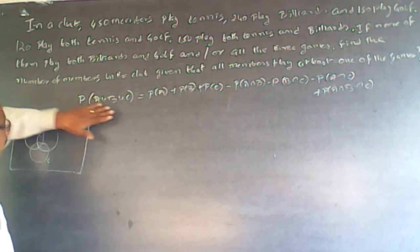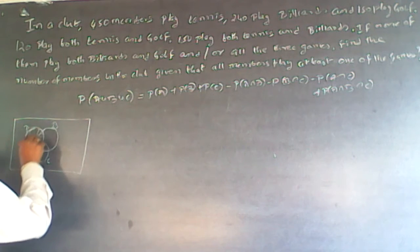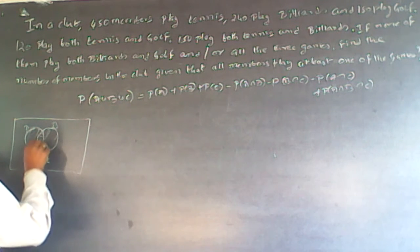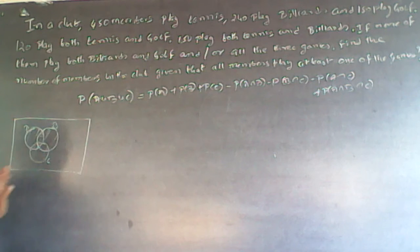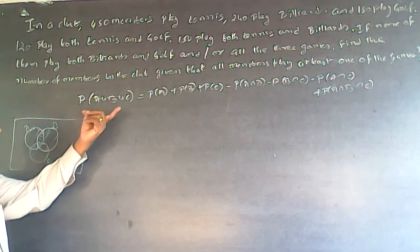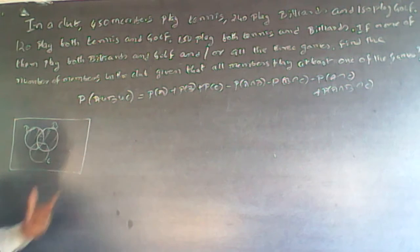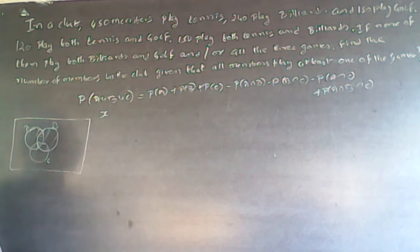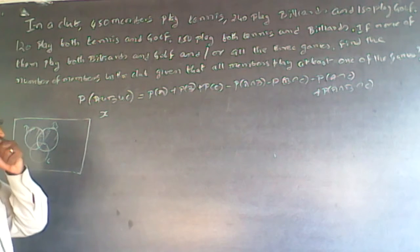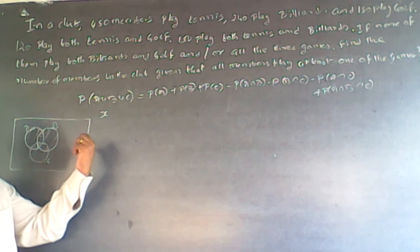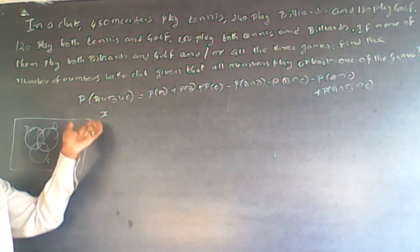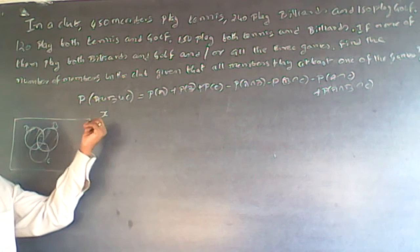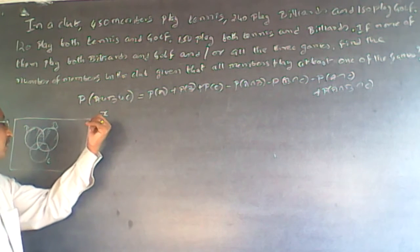A union B union C means all those coming here. Which number you don't know? So the algebraic was x, you have to find out. This number you don't know, you have to find out. So this is x, this is the x.